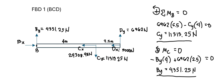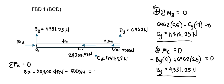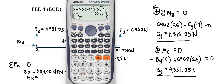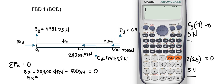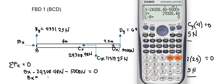To solve for BX, we take summation of forces horizontal equal to 0: BX minus CX (24,308.48 newtons) minus DX (5,000 newtons) equals 0. Solving, BX is equal to 29,308.48 newtons.